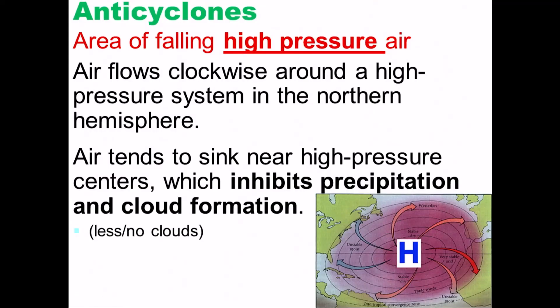For low pressure, the air is rising, which tends to bring things toward it. For anticyclones or high pressure, they tend to have sinking air, which means it pushes things away from it. Generally, with high pressure, you're not going to get any storms or clouds.